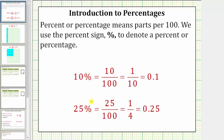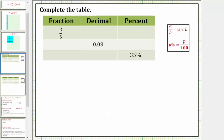To do these conversions, there are two main things to remember. First, a fraction bar means division, and therefore the fraction A over B is equal to A divided by B. And second, a percent is always a number compared to 100, and therefore P percent as a fraction is always P over 100.